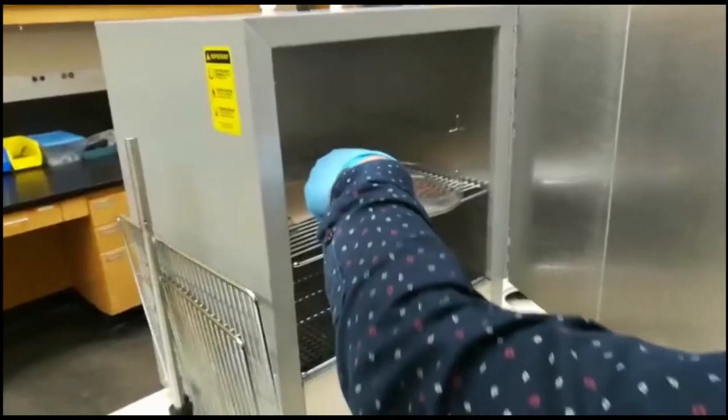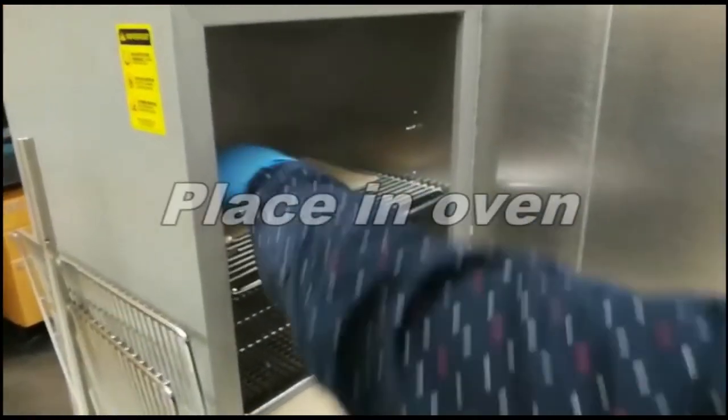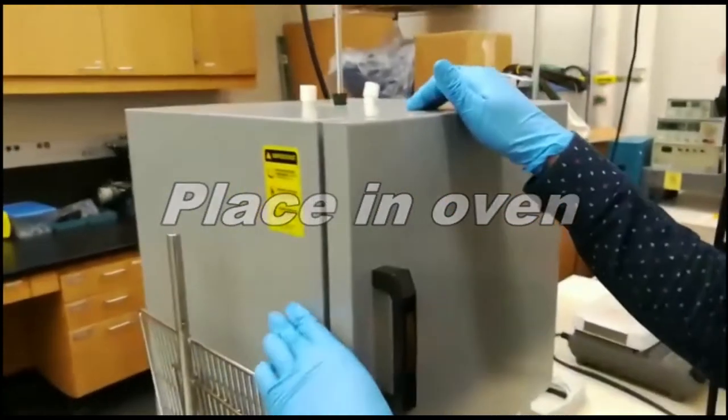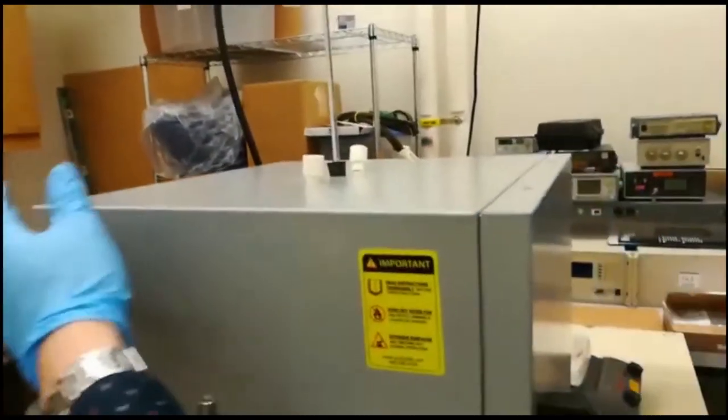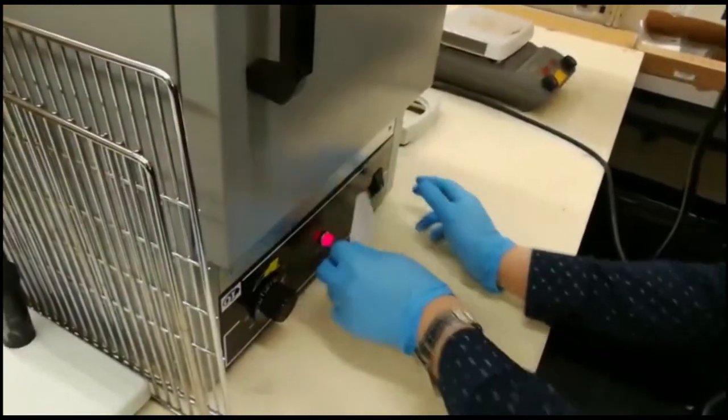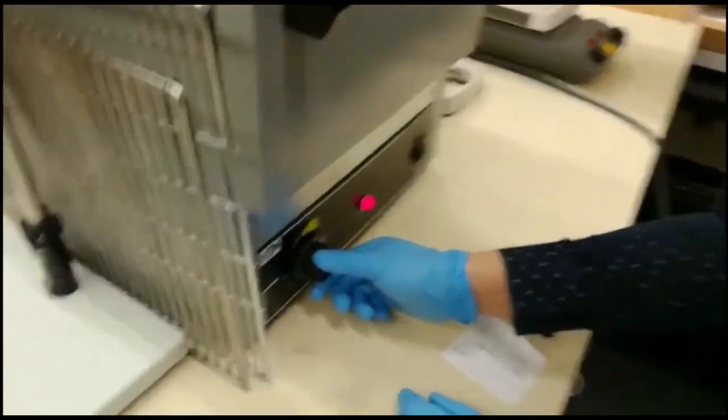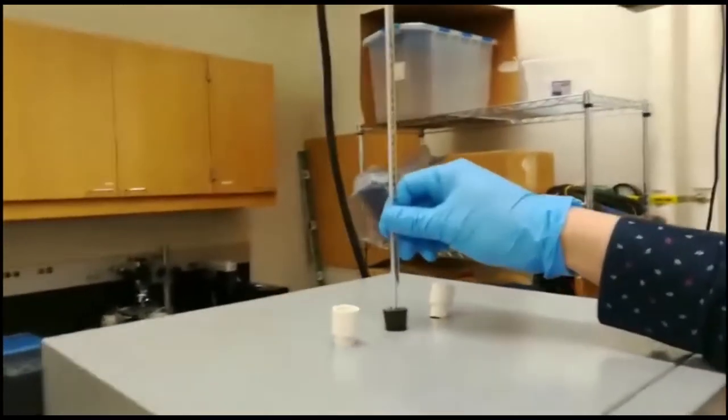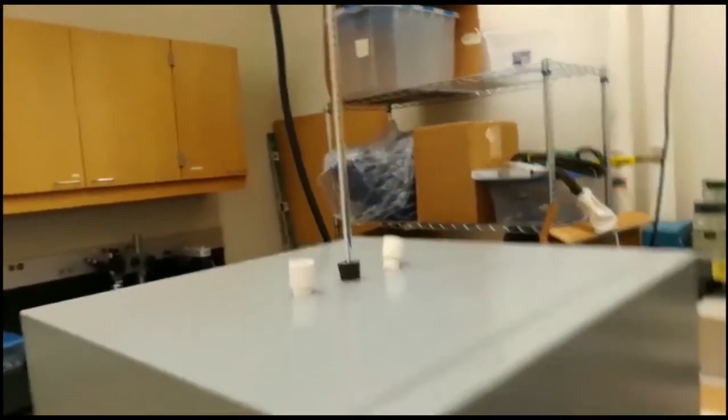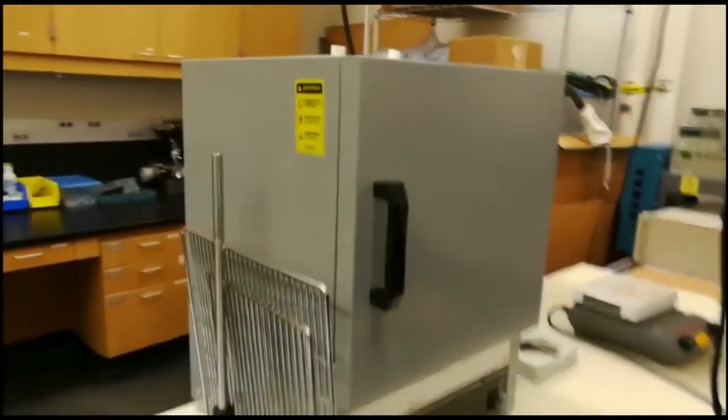We can put this petri dish into the oven and heat it to 80 degrees for two hours. This is the temperature monitor, and we set it to 80 degrees. After two hours we can take it out.